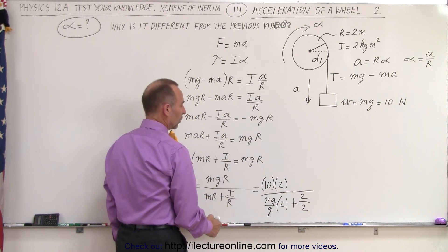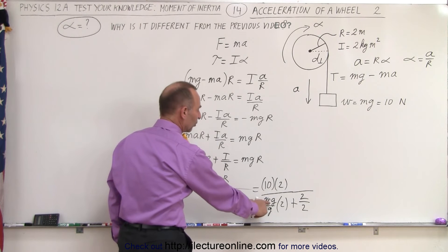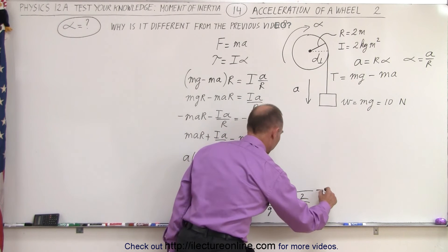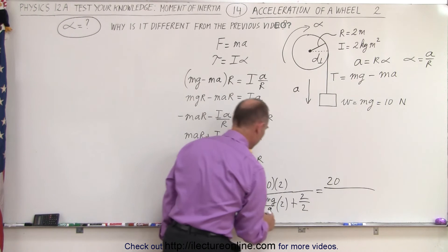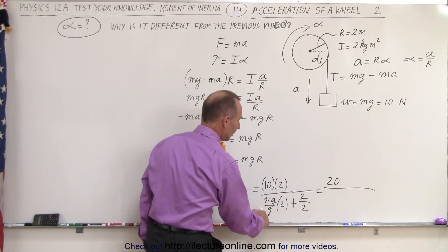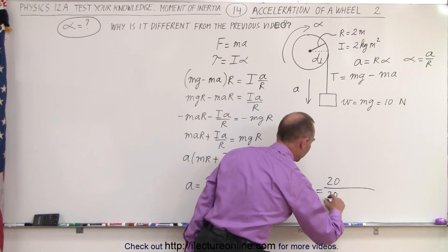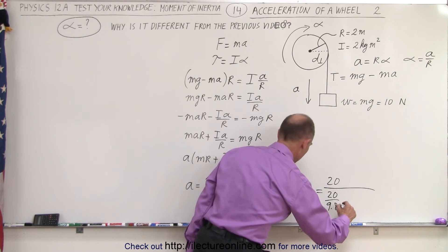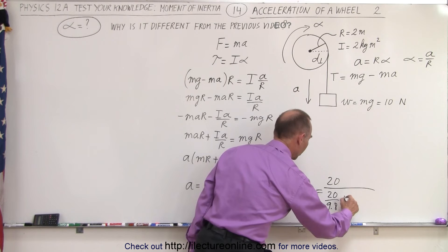So here we have Mg, which is 10 divided by 9.8. So this would be equal to 20 divided by (Mg, which is 10, times 2, which is 20, divided by g, which is 9.8—so 20 divided by 9.8—and then plus 1).